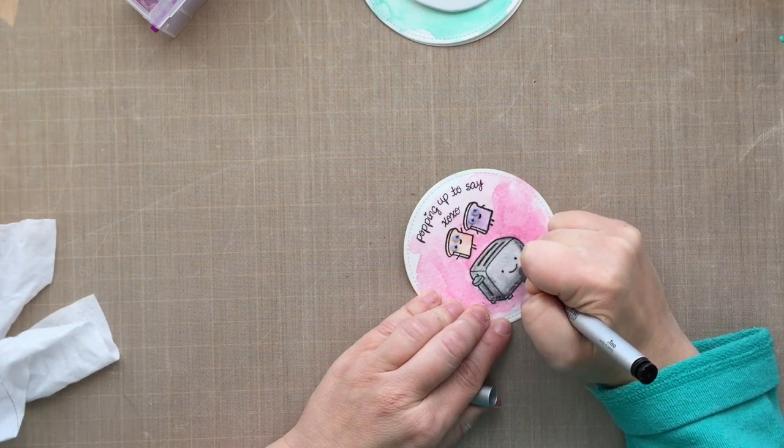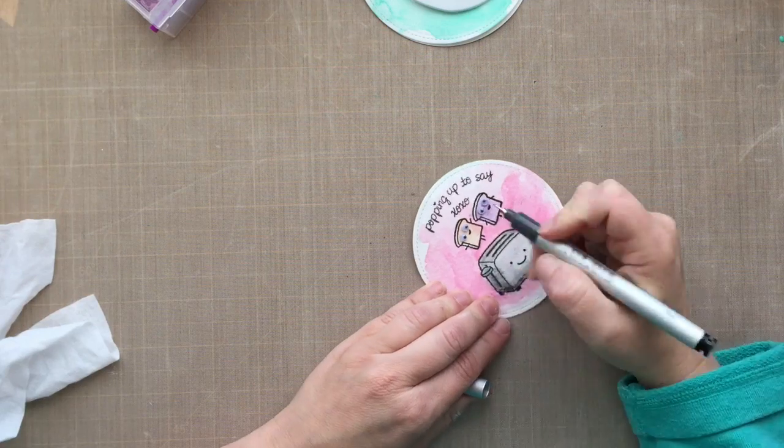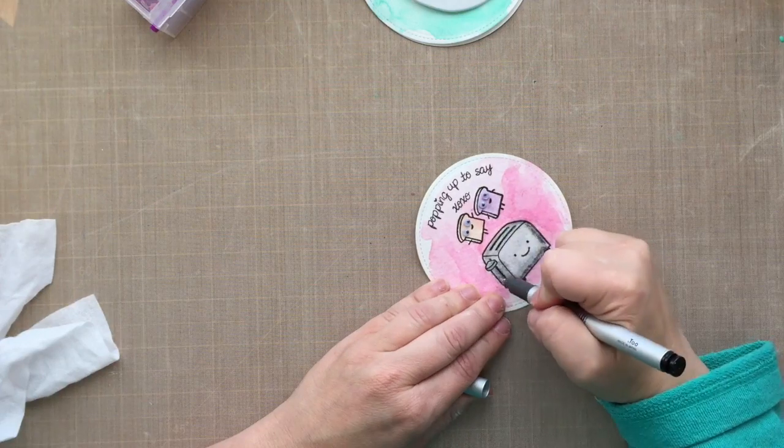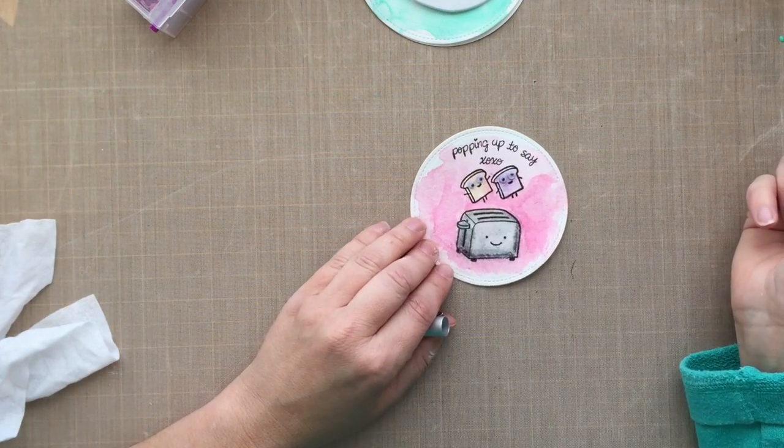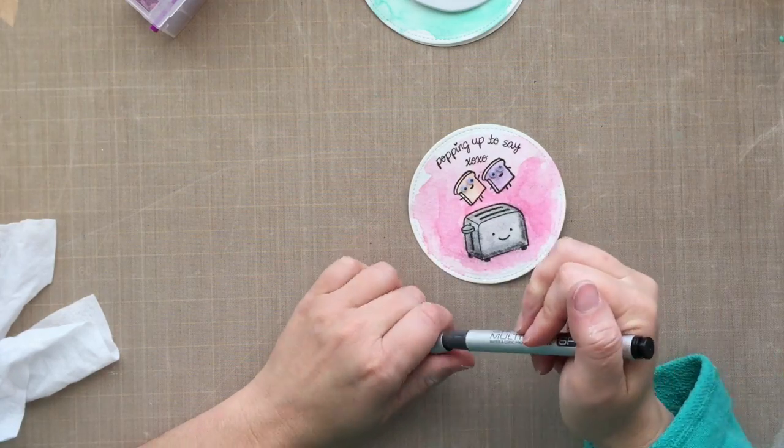So since I did so much watercoloring, not even the heat embossed image could save that. So I've got my Copic multiliner here, and I'm just going in, kind of going over the eyes, the smiley face, and some of the outlines of the toaster that kind of got washed away with all that watercolor. I think that's a .3 Copic multiliner.